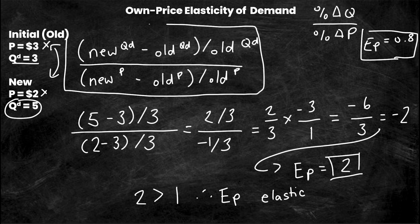After that, it's simply remembering this equation right here: new minus old over old, over new minus old over old. In this case the determinant is price because it is own-price elasticity of demand. But if the determinant was income, the same thing would apply, and that's a video we can make in the future if you want to learn more about income elasticity of demand.